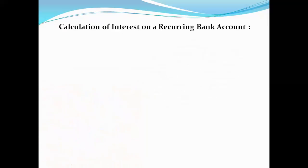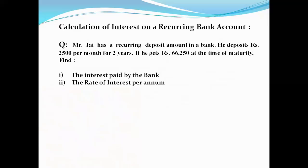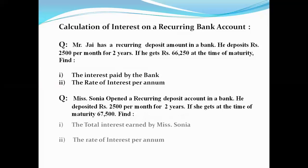The next section covers the calculations of interest on a recurring bank account. The first problem: Mr. Joy has a recurring deposit account in a bank. He deposits Rs. 2500 per month for two years. If he gets Rs. 66,250 at the time of maturity, he has to find first the interest paid by the bank, and second the rate of interest per annum.